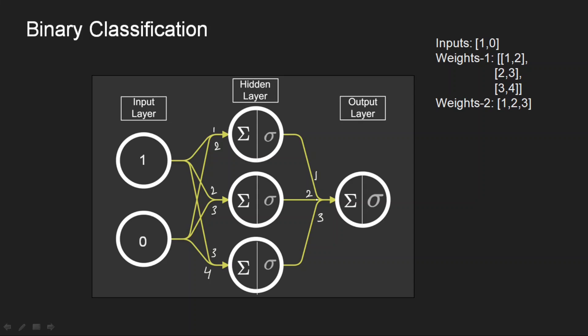Consider the same binary classification problem we saw earlier. We need to calculate the weighted sum before applying the activation function. With weights 1, 2, 2, 3, 3, 4 and the given inputs, let's suppose we calculate weighted sums of 1, 2, and 3.